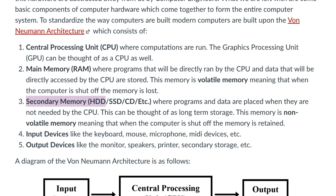Secondary memory, like your hard drive, solid state drive, a CD, flash drive, etc., is where programs and data are placed when they are not needed by the CPU. This is a type of long-term storage, and this long-term storage is non-volatile memory, meaning when the computer is shut off, the memory is retained.